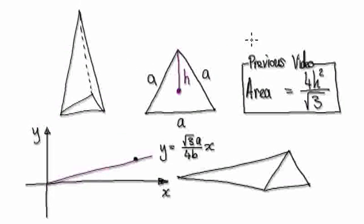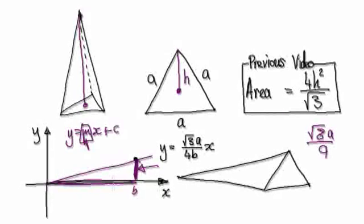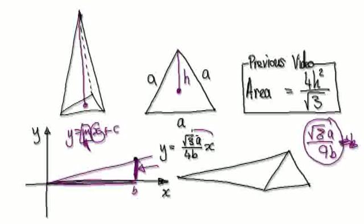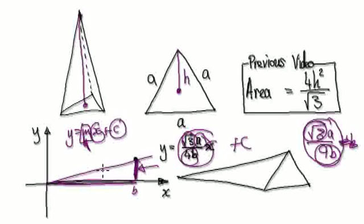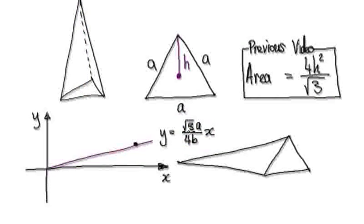Going back — we need the equation of this straight line. The equation is y = mx + c. This height here is √3a/4. To work out the gradient, you divide that by b — the length along the base. So the gradient is √3a/(4b). The equation becomes y = (√3a)/(4b)·x, plus c. But this line goes through the origin, so c equals zero. The equation of this straight line is y = (√3a)/(4b)·x. We now have the ability to work out the height as we're moving along.